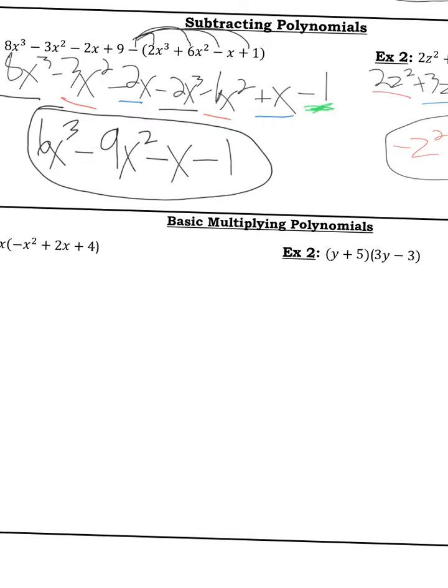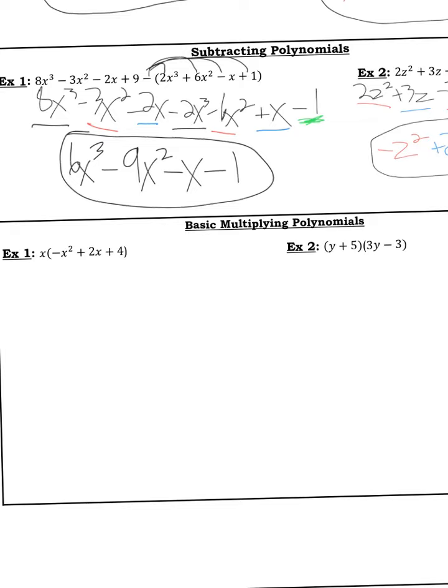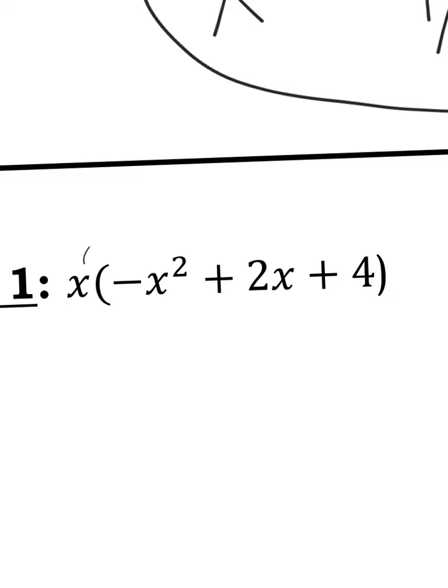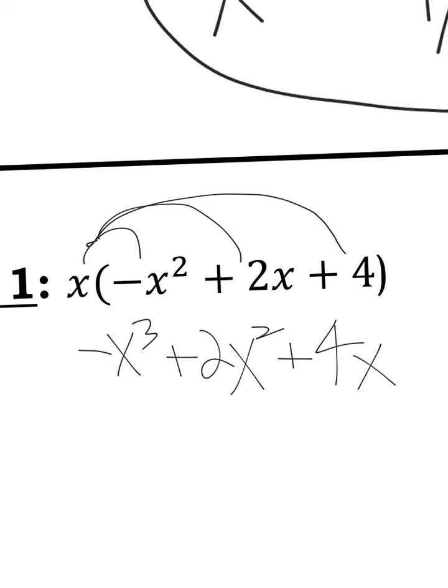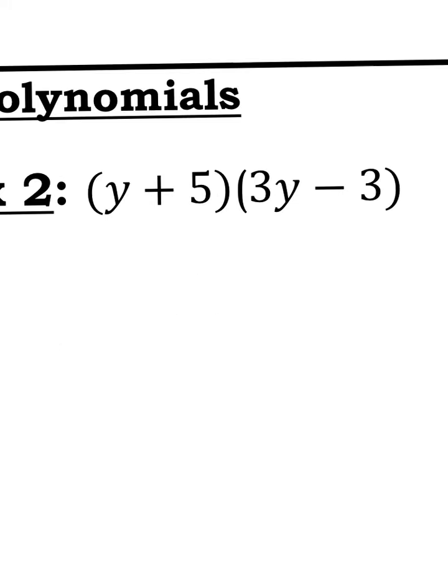Now let's talk about basic multiplying of polynomials. The reason why I say basic is because there's not going to be a whole lot of terms here. So when you multiply, you distribute if you see parentheses. So everything's basically going to go up by a degree. What's x times negative x squared? That'll be negative x to the third. What's x times 2x? That's 2x squared. What's 4 times x? That's 4x. That's the final answer.